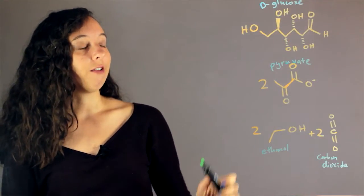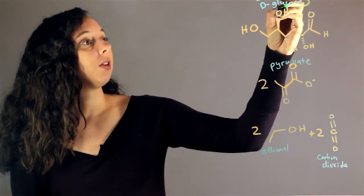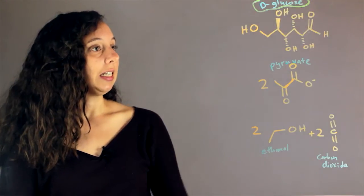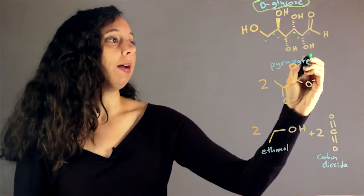First we start with our sugar, D-glucose, which is one of the most common sugars in nature. If we look at it carefully we can see it has one, two, three, four, five, six carbons.